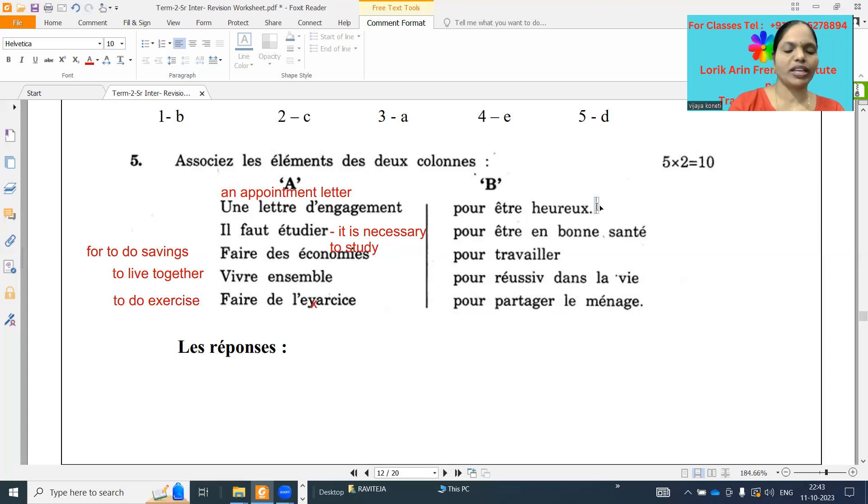This one, pour être heureux. For to be happy. And pour être en bonne santé. For to be in good health. And next one, pour travailler. For to work. And pour réussir dans la vie. For to succeed in the life. And next one, pour partager les ménages. For to share the household work.